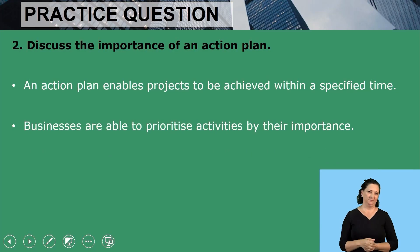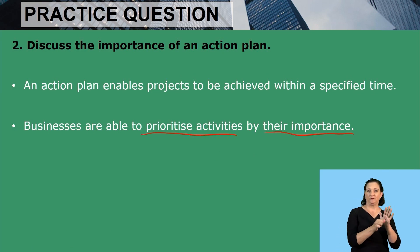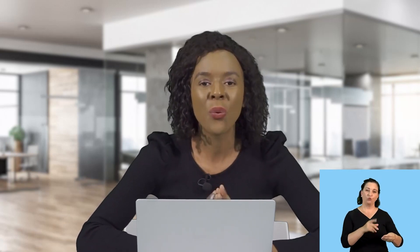Businesses are able to prioritize activities by their importance. An action plan is important because businesses are able to make sure that they start with the important activities first, because those activities would have been prioritized on the action plan. When they execute those activities, they know very well which ones to start with in order to achieve the goal of the business.